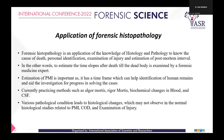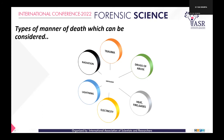Various pathological conditions can lead to histological changes and can affect the analysis when relating to PMI, cause of death, and examination of injury. The types of manner of death considered in histological analysis include death caused by trauma, drug abuse, heat, fire, gases, electricity, lightning, and radiation.